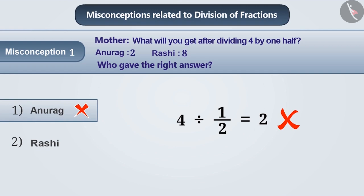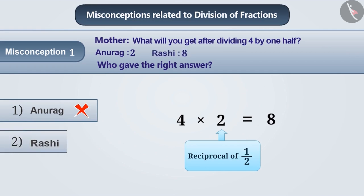Option 1 is wrong. The correct understanding is that dividing 4 by one half means that 4 is multiplied by the reciprocal of one half, and that is 2, which results in 8. This means that Rashi's understanding is correct.